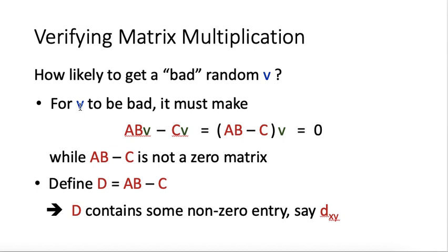How likely do we get a bad random vector V? First of all, for this V to be bad, it must make ABV equal to CV. So ABV minus CV, we can create a matrix called AB minus C, and then this AB minus C times V has the same value as ABV minus CV. It must make this ABV minus CV to be equal to 0. But on the other hand, for V to be bad, we have also a condition that AB minus C is a non-zero matrix, because we require that AB is not equal to C to begin with. Otherwise, we will never make any mistake.